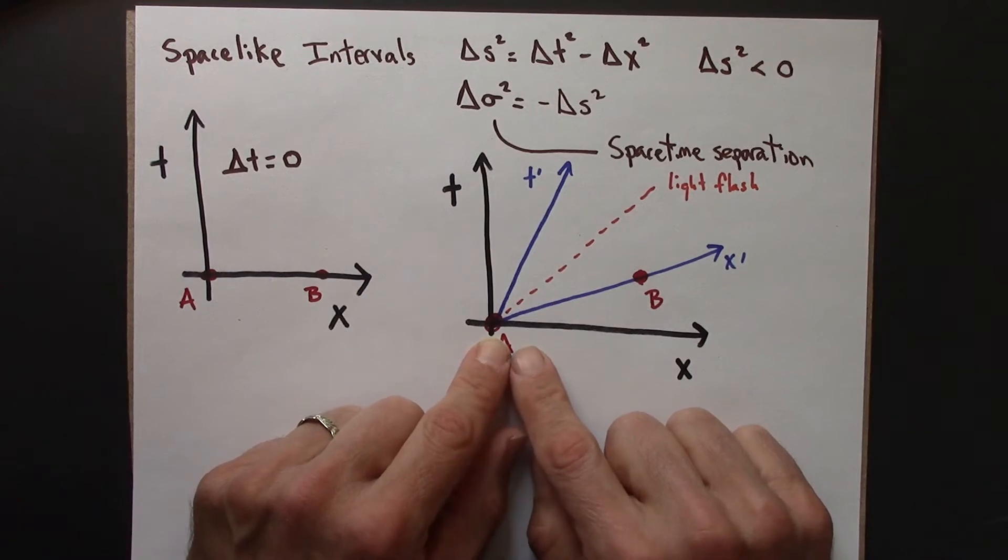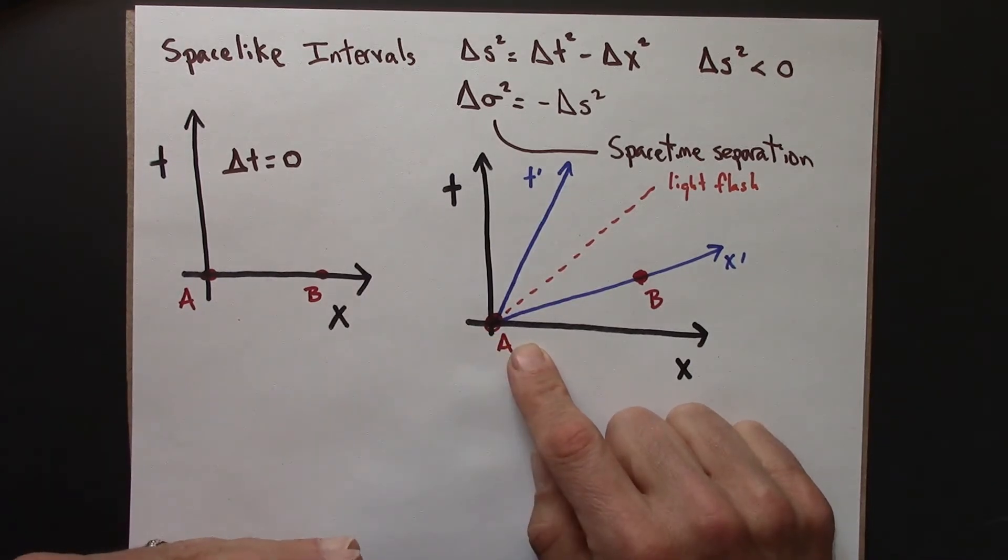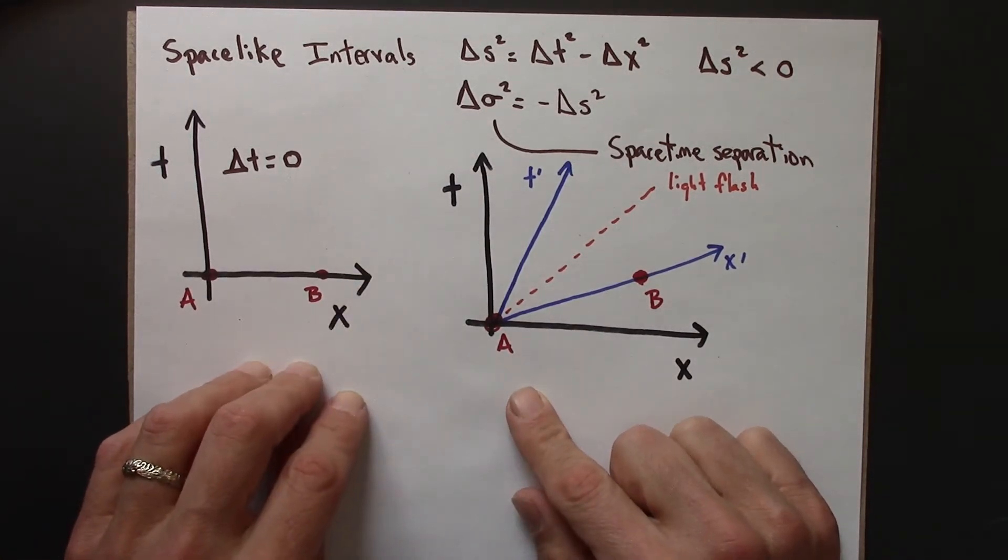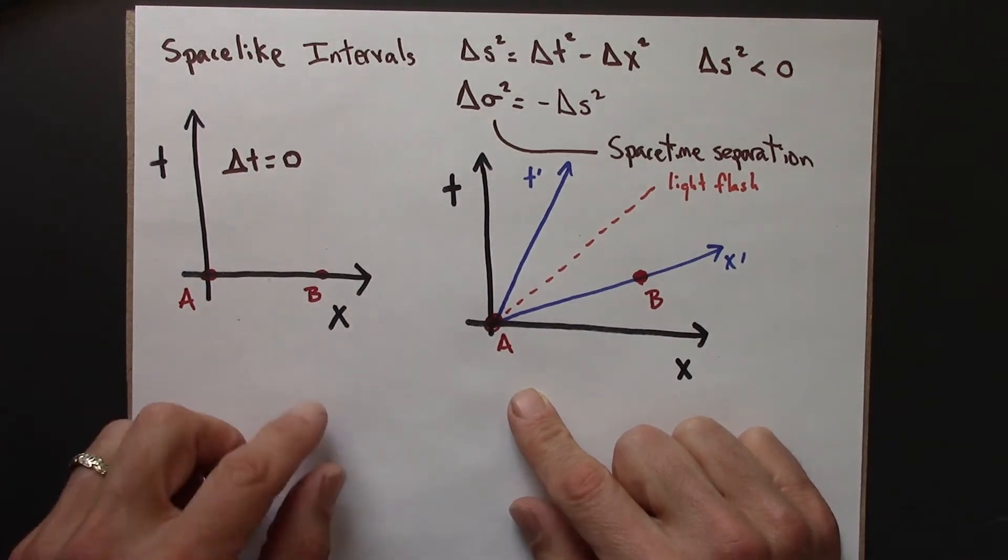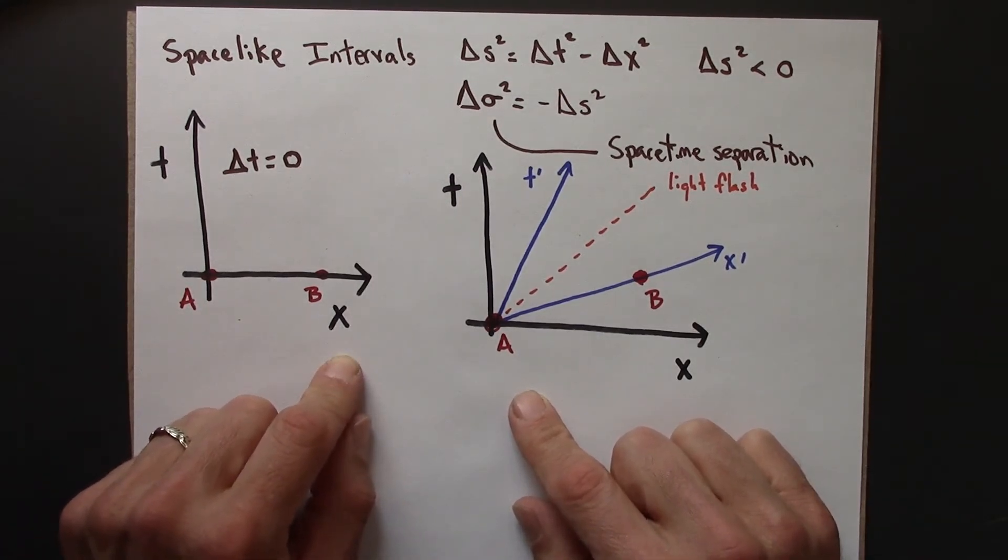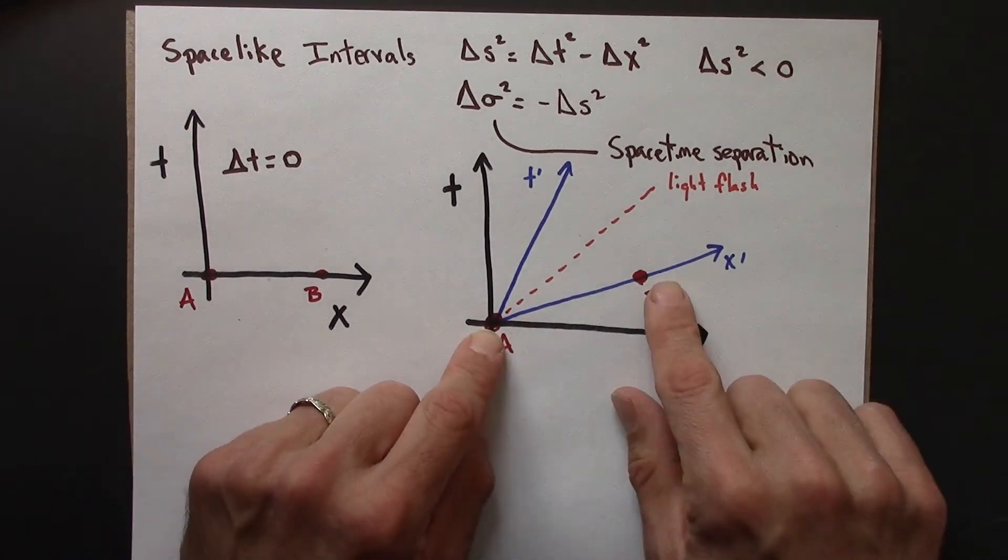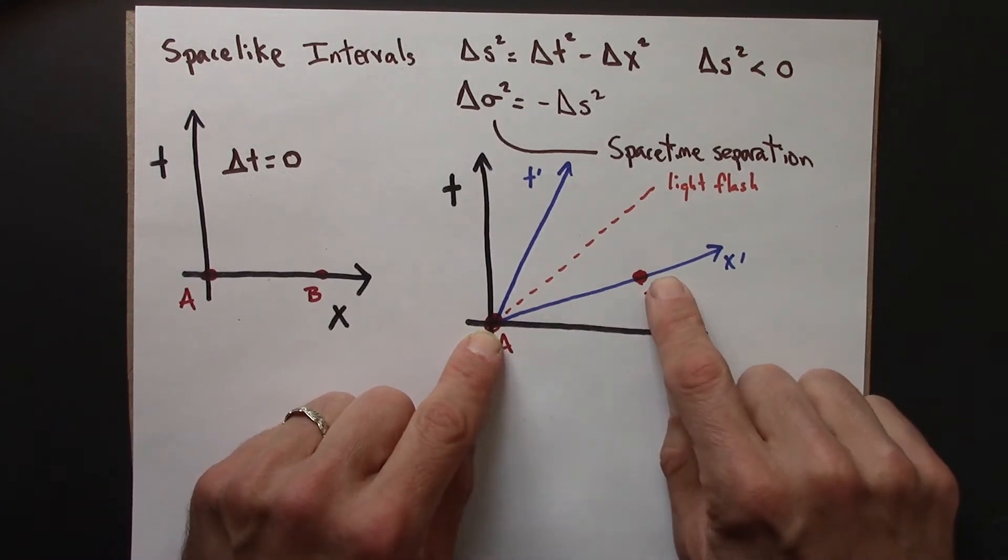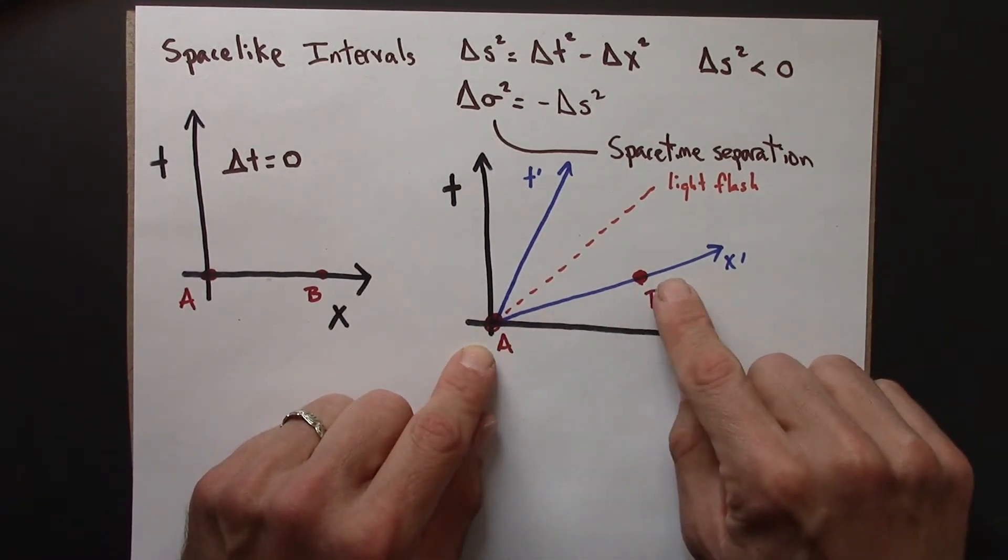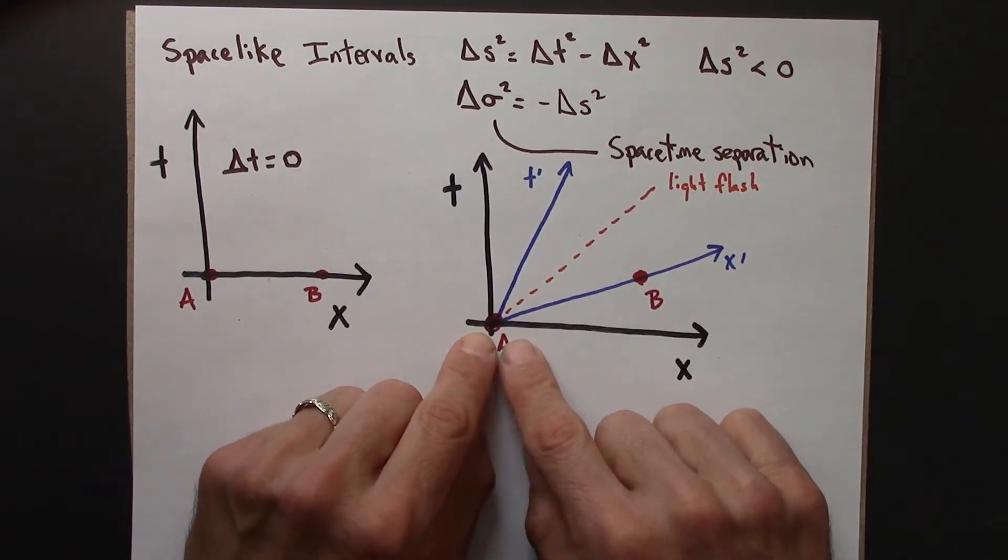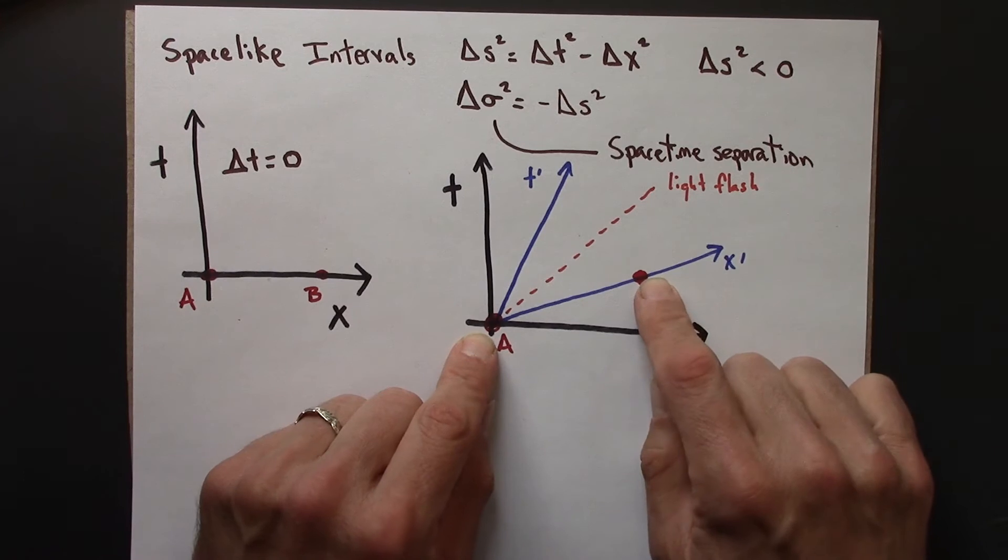So the last thing to think about a little bit is the following. We've seen that delta s squared, the spacetime interval, is frame-independent. And we argued that because the operational definition of a spacetime interval was it's the clock reading measured by a single clock present at both events. But here, there's a problem with that definition. Because it's impossible for the same clock to be at event A and at event B.